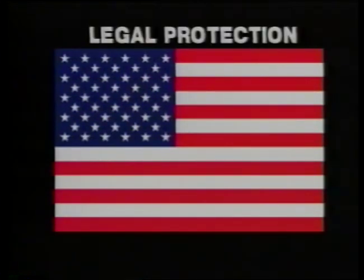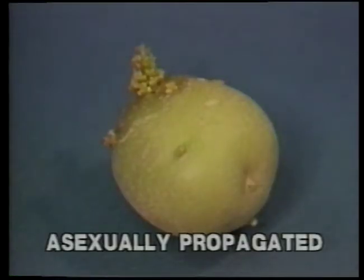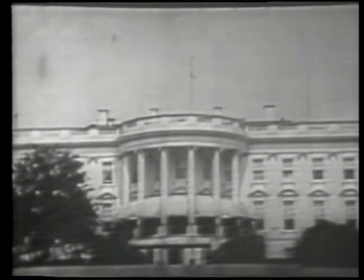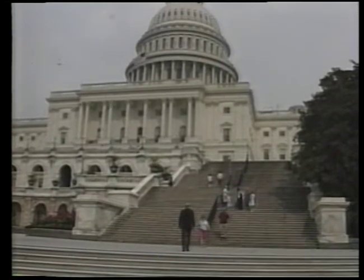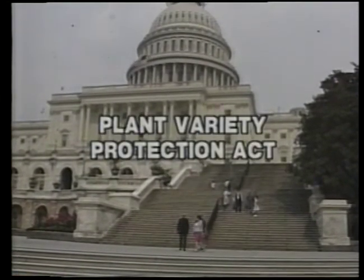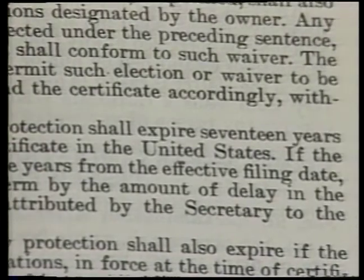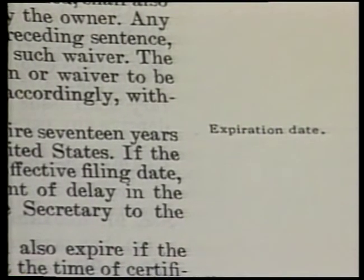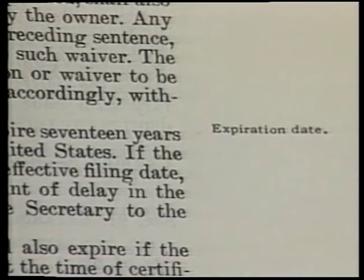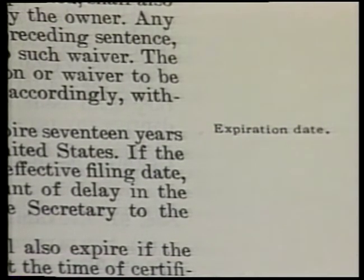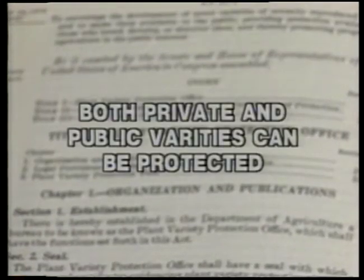In the U.S., the owner of a new variety may have legal protection from someone who is unauthorized to grow and sell it. Asexually propagated crops can be protected through plant patenting procedures established in the 1930s. However, sexually propagated crops were not protected until the establishment of the Plant Variety Protection Act in 1970. Protected varieties are legally protected for 17 years, and then the variety becomes public property. Varieties which do not have legal protection are called common varieties. Both private varieties and public varieties can be protected.